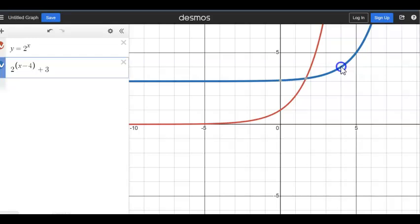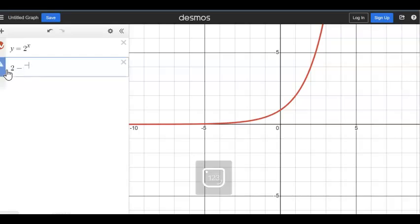All right. So again, I got left, right motion inside the function, up, down motion outside the function. And then if I start throwing in those reflections as well, so let's say I said 2 to the negative x, notice it reflects it across y, reflects it here, that 0, 1.